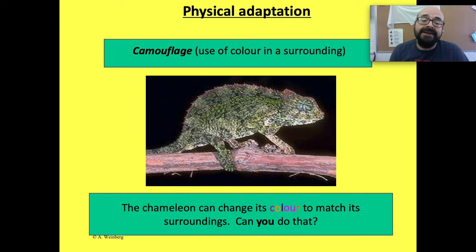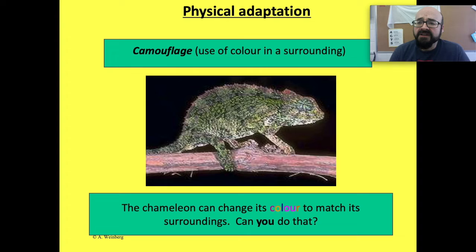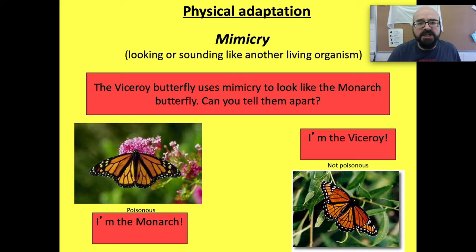The first physical adaptation we're going to look at is camouflage — the use of color in a surrounding. The most common example is the chameleon, which can change its color to match its surroundings. You could do something similar by wearing camouflage like army fatigues in a field, or dressing completely in white during winter. But your skin cannot do that on its own — so there is a difference. That's the first physical adaptation: camouflage.